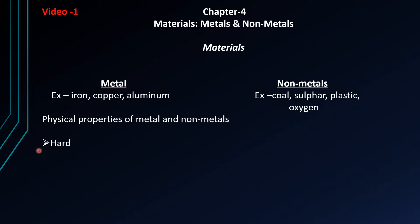Mercury is also a metal but it is found in liquid form. You have seen that thermometers use mercury — as the temperature increases, mercury rises up. If mercury falls on the ground it is very difficult to collect. Copper, on the other hand, is very hard. Similarly, coal is a non-metal and it is not very hard.